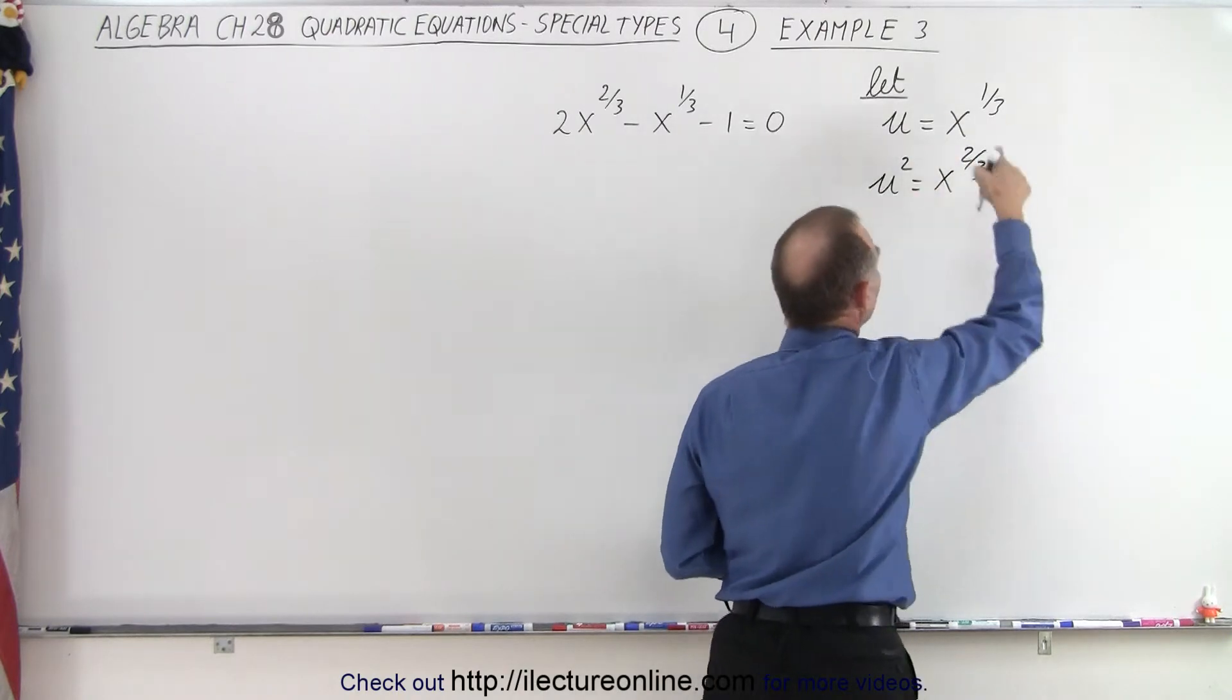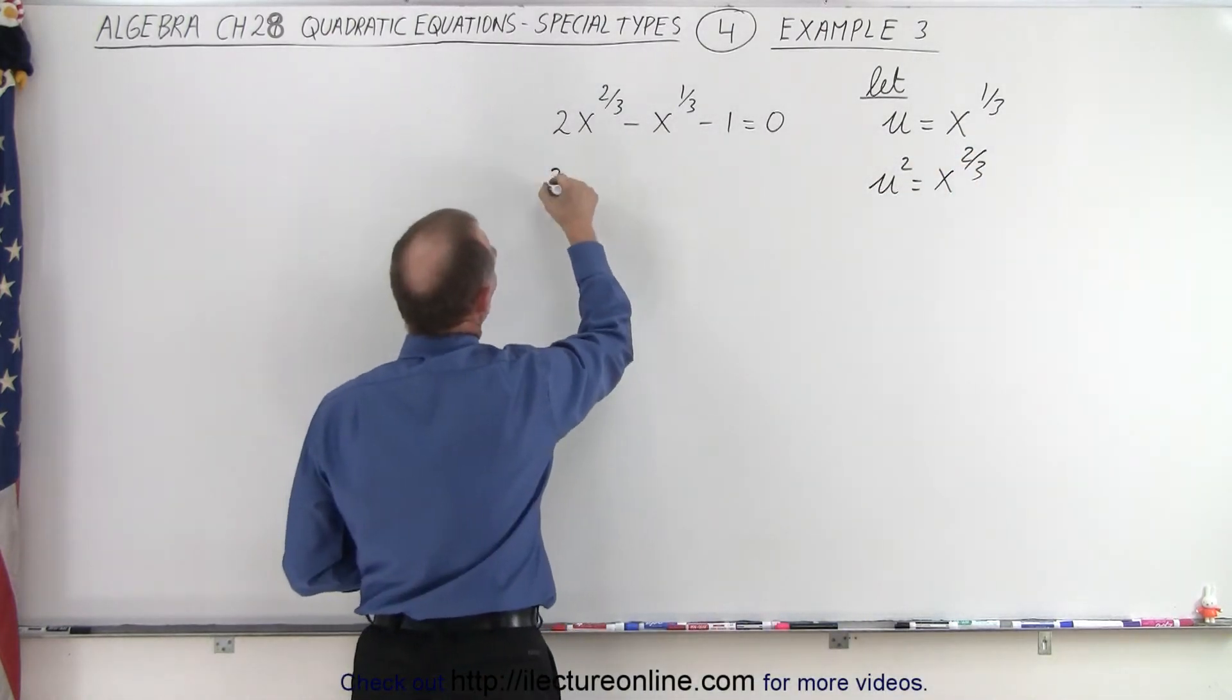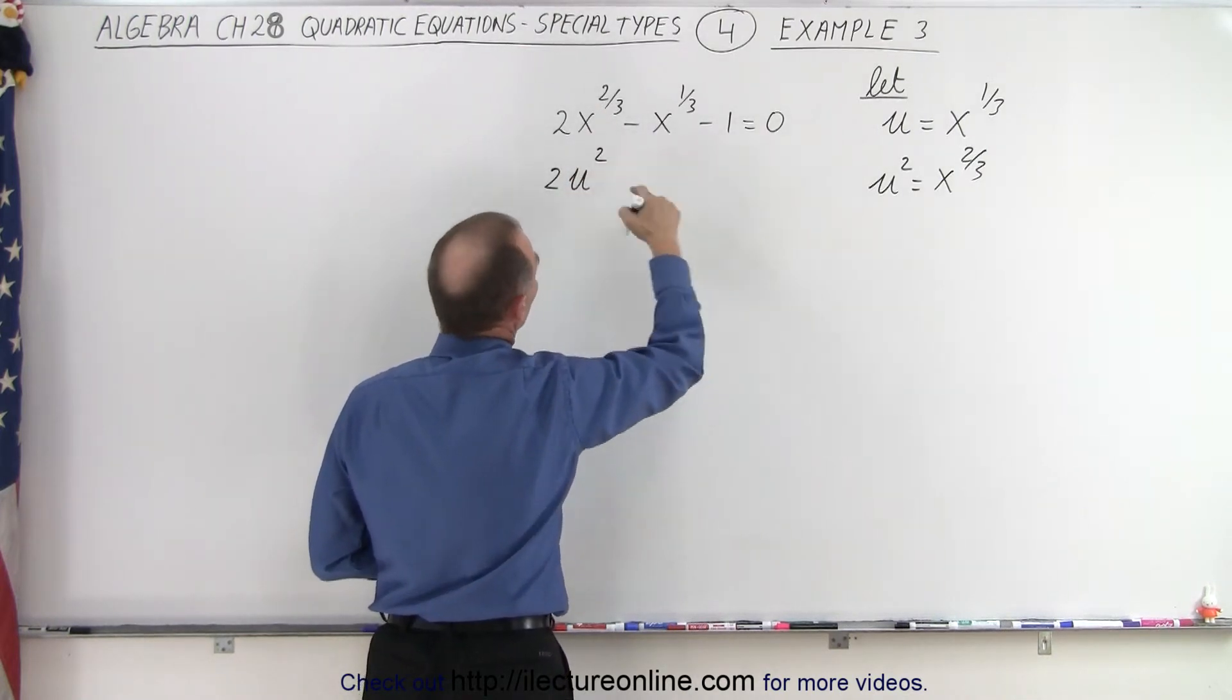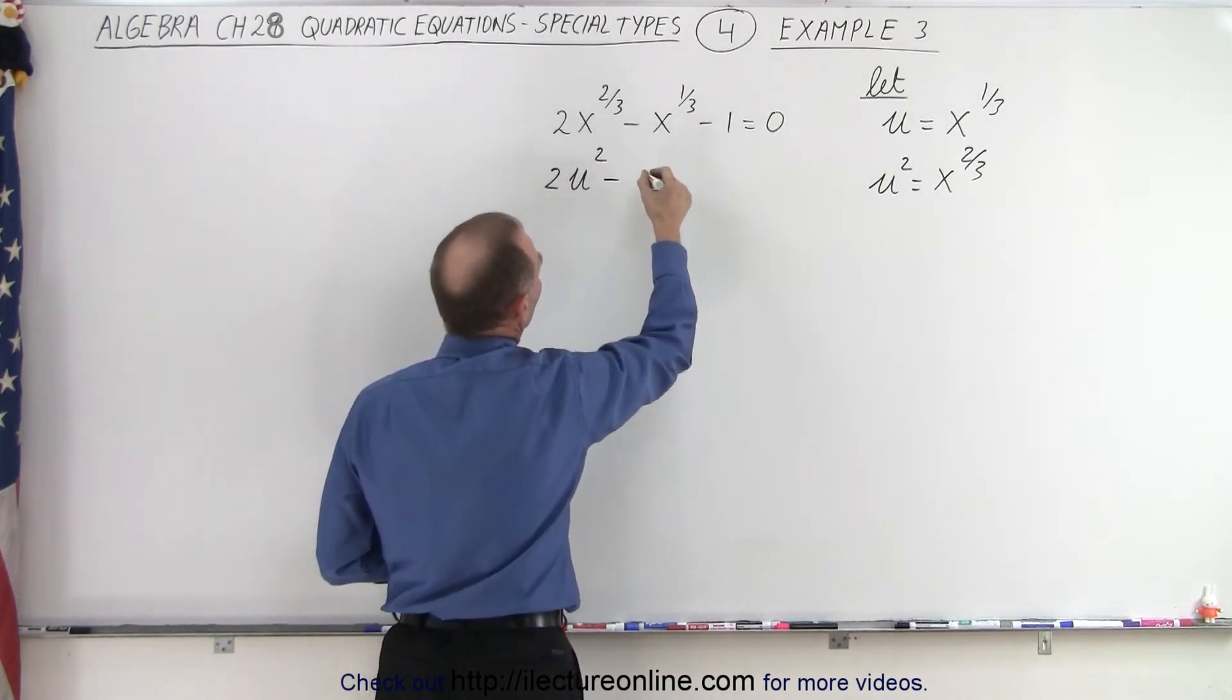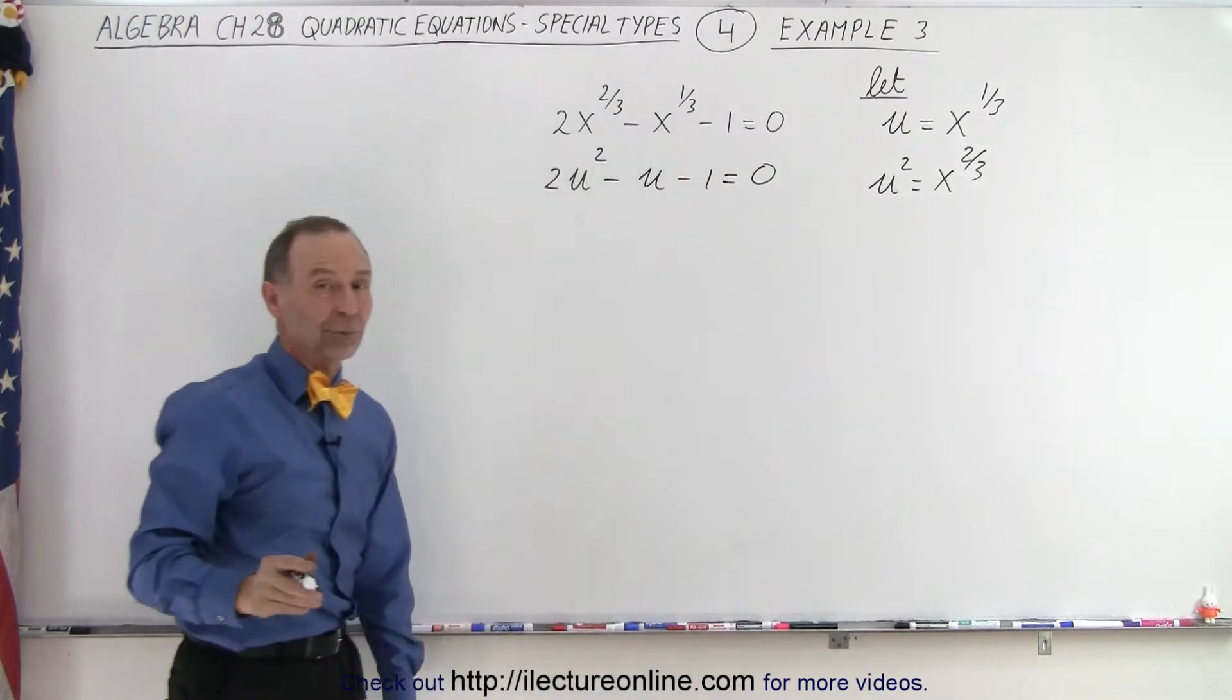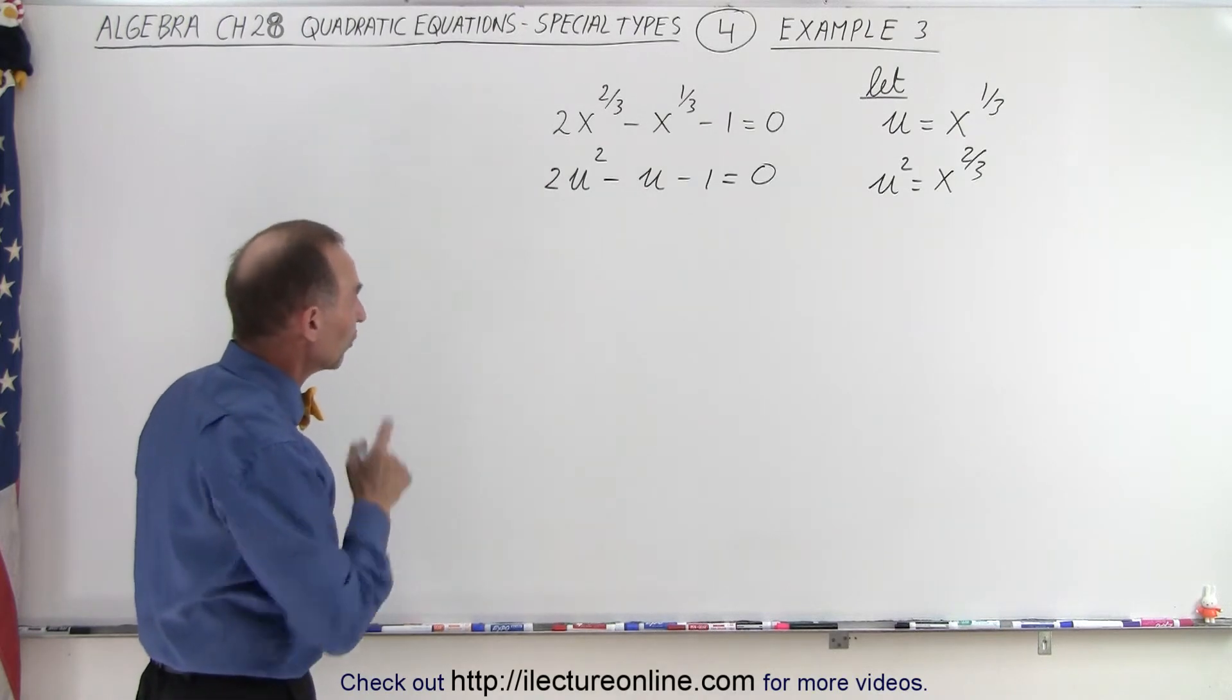And notice we can now make the proper substitution in here. So this becomes 2u squared, because x to the two-thirds is now u squared, minus x to the one-third is u, minus 1 equals 0. And now we have something that definitely does look like a quadratic equation.